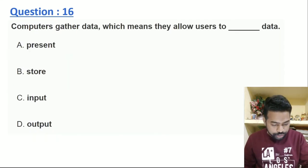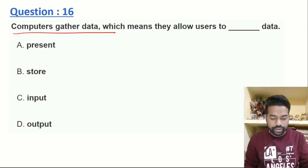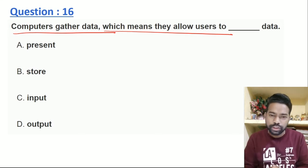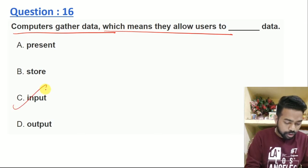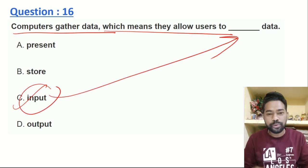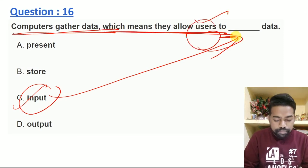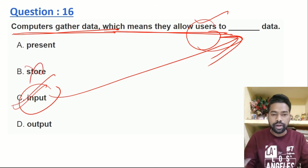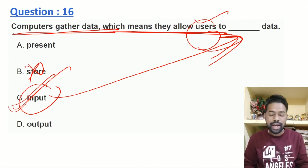If people are using computers, they can find a small number of computers to collect data. We already have our computer — if the computer wasn't like this, then we have the input data that was given to be able to store the data. This is the idea: we have to allow it to take input data and store it. We have the right answer to the input.